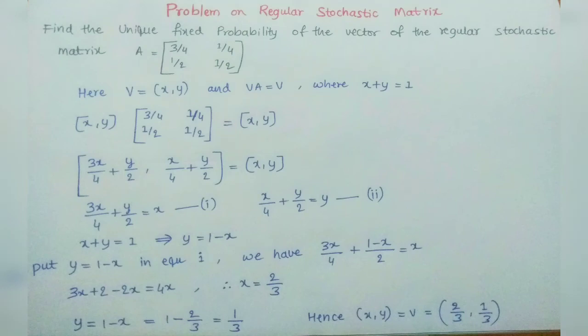Find the unique fixed probability vector of the regular stochastic matrix A equals [[3/4, 1/4], [1/2, 1/2]].